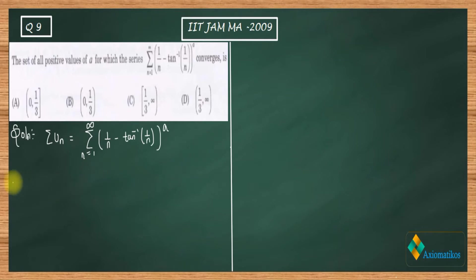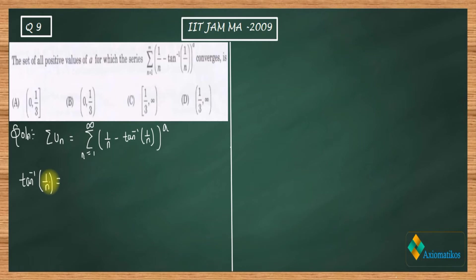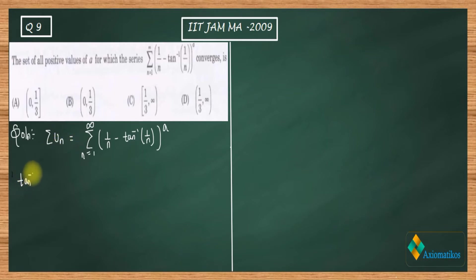I am going to use the power series expansion of arctan(1/n). If you remember this expansion, then you are done with this question. Let me write arctan(x) — if you know this expansion well, you can solve this problem. It is similar to the sine expansion, but the key difference is that no factorial is used here.